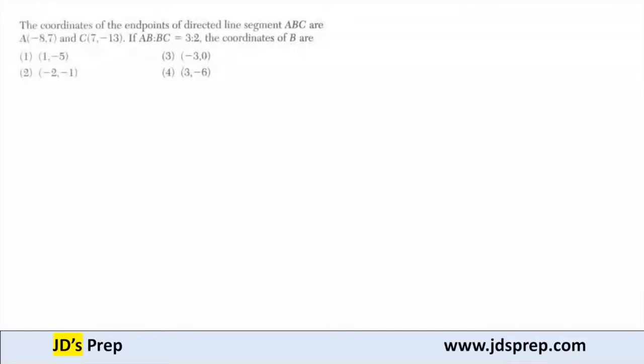Hello, welcome to JD's prep. In this example, the coordinates of the endpoints of directed line segment ABC are A(-8, 7) and C(7, -13). If AB to BC is equal to 3 to 2, what are the coordinates of B?